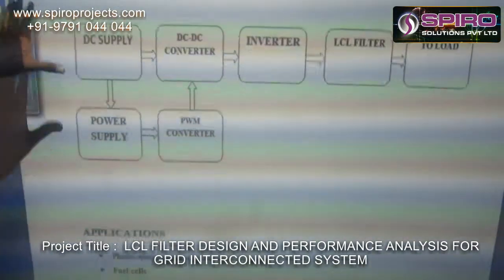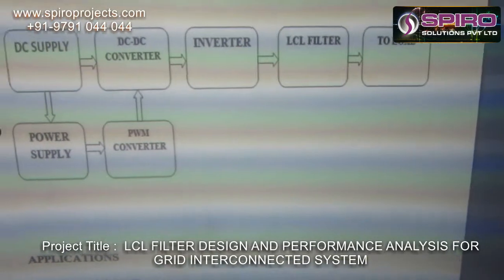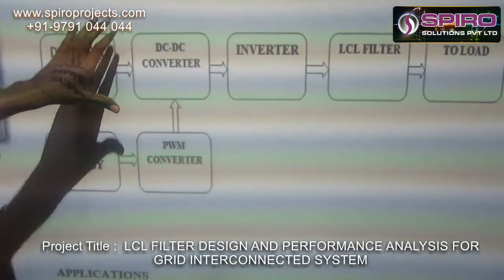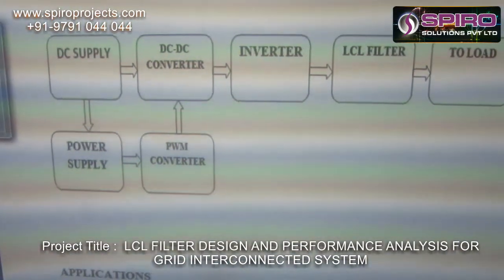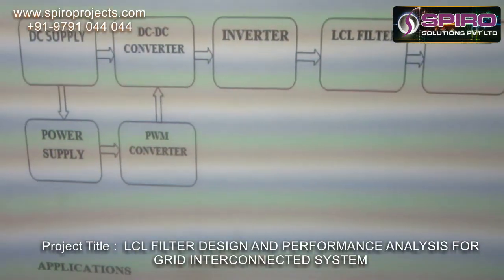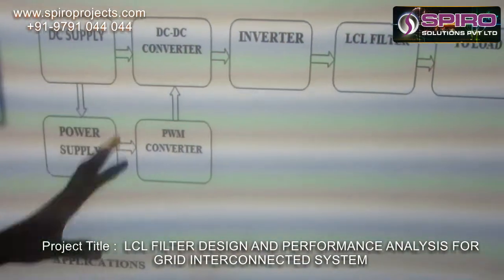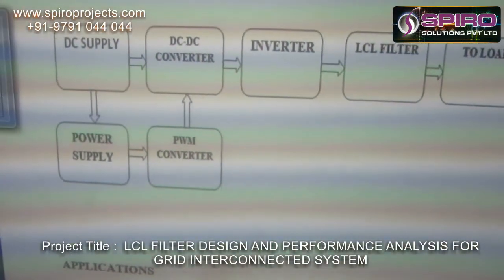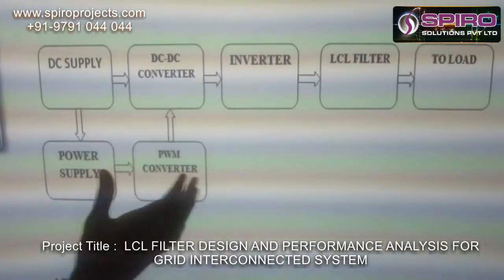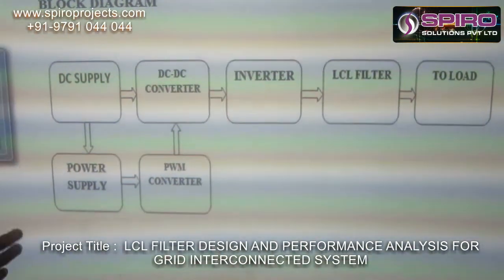This is our block diagram of the proposed system. This is the DC supply, which gives the DC supply to the DC-DC converter. The function of the DC-DC converter is that it can step up and step down the voltage. After that, we need to convert it into AC, which is why I am using an inverter.